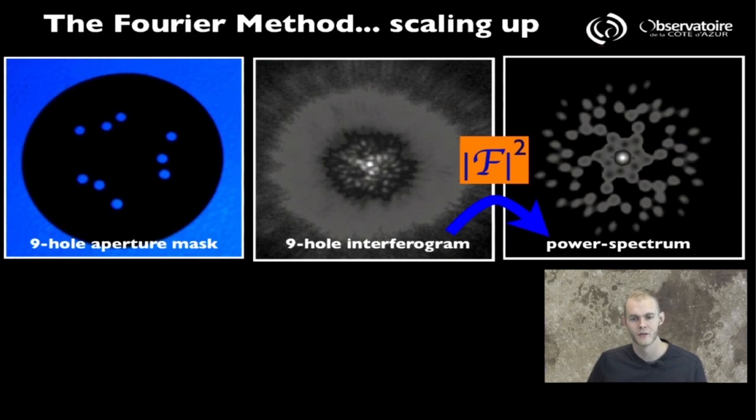Now you see that from the left to the right we have the 9-hole aperture mask with a peculiar geometry that ensures that no pair of apertures can actually be repeated in the array. In the middle you have the corresponding interferogram that is produced by one such 9-hole aperture mask.